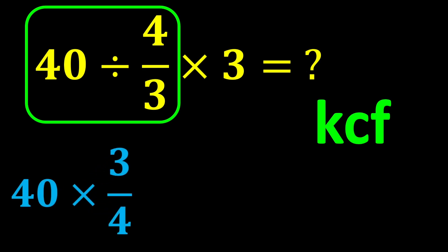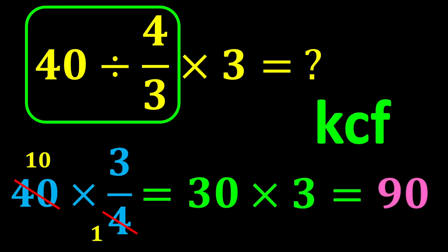Therefore, the expression changes from 40 divided by 4 over 3 to 40 multiplied by 3 over 4. 40 divided by 4 becomes 10, and 4 divided by 4 gives us 1. Then 10 multiplied by 3 gives us 30. Finally, 30 multiplied by 3 gives us 90, and our final answer is 90.